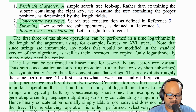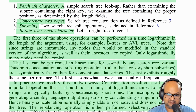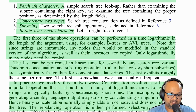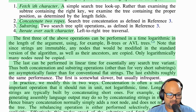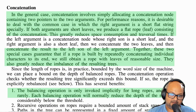Now, assuming that this tree is well balanced — and we'll look at that in a minute — this operation would be O(log n), where n is the length of the string.